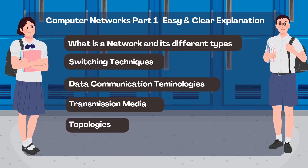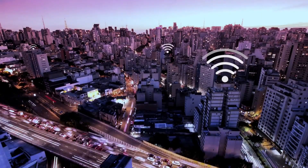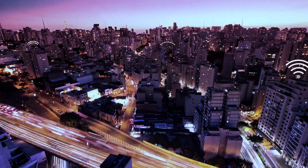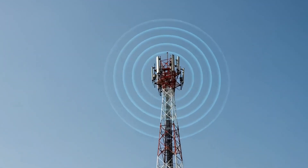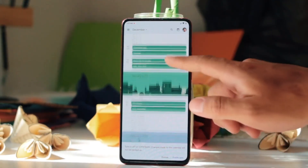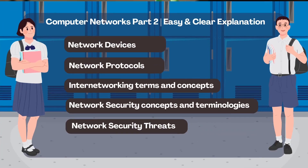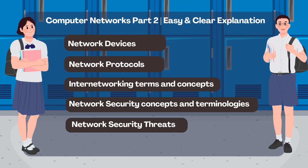Sid has already taken his first step into the world of computers. He explored networks and their types, learned about switching techniques and understood transmission media. But as he went deeper, a new set of questions came to his mind: How do devices actually connect with each other? What rules make this communication possible? And most importantly, how do we keep our data safe in the connected world? That's when he started exploring the next phase of computer networks.